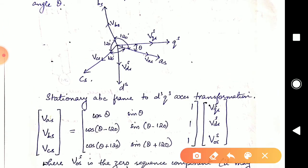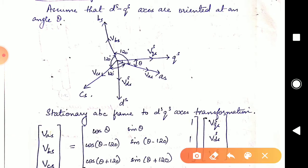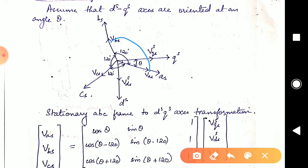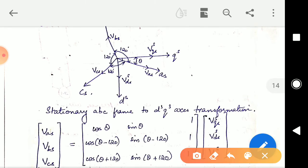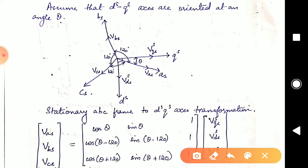Now taking BS as our reference, we will resolve along the VBS axis. The angle between BS and QS will be 120 minus theta. Looking closely at the figure, the total angle is 120 and the small angle is theta. Subtracting theta from 120 gives this angle. So resolving VQS in terms of VBS, you get cos(θ − 120), and resolving VDS you get sin(θ − 120).